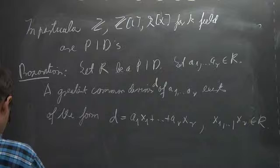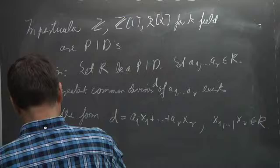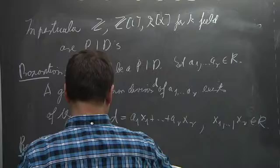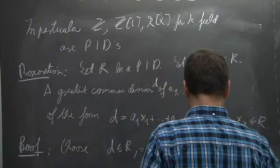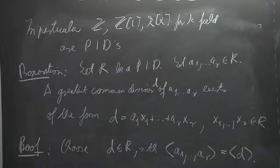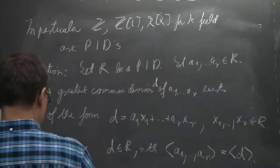The idea is: a_1 through a_r generate an ideal; since R is a PID this ideal is principal, generated by one element D. This element D will be the greatest common divisor. Proof: we choose D in R such that the ideal (a_1, ..., a_r) equals (D). The claim is that D is a greatest common divisor.